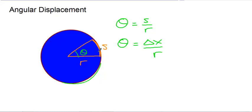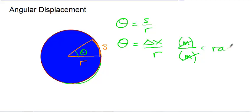So delta X — the arc length — divided by the radius gives us the angle in radians. We could also measure angular displacement in terms of revolutions. A revolution is one time around the circle, and a rotation is also one time around. Generally, a revolution describes an object moving around something else, like the Earth revolving around the Sun, while a single point on a circle might revolve, but the whole object itself rotates.